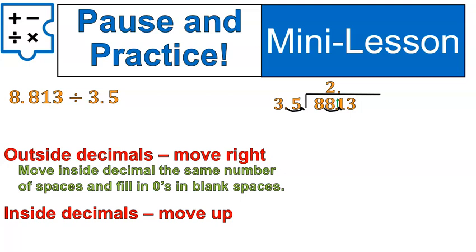How many groups of 35 inside of 88? Two. Two times 35 is 70. I'm going to subtract, bring the 1 down, and ask myself how many groups of 35 inside of 181. There's 5. And 5 times 35 gives me 175. I'll subtract, get a 6, bring it down, and I have 63. How many groups of 35 inside of 63? Well, there's just 1. One times 35 is 35.